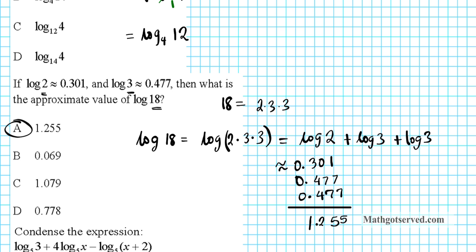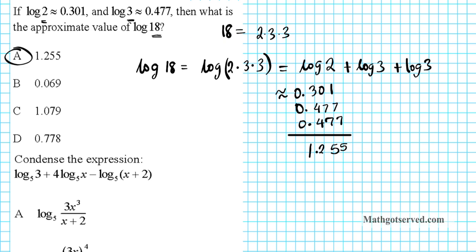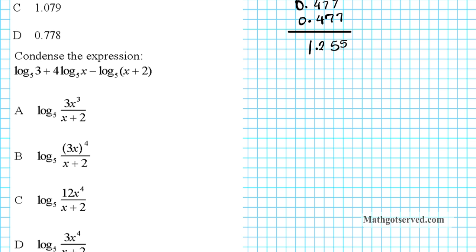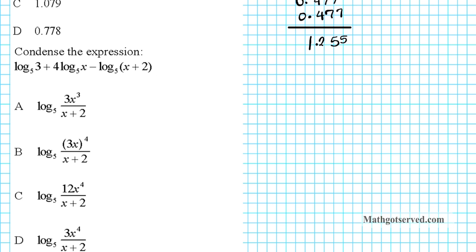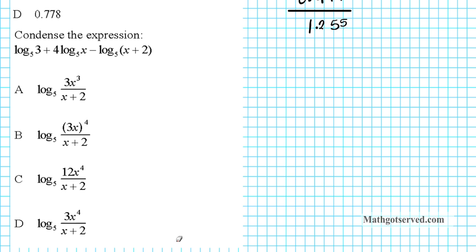Alright, let's shift our attention to the third question. So for the third one we have, we get to condense using the properties of logarithms. So we're going to be going backwards in this example. So here we have the sum which we can express as a product and then we also have a minus or difference which can be expressed as a quotient.